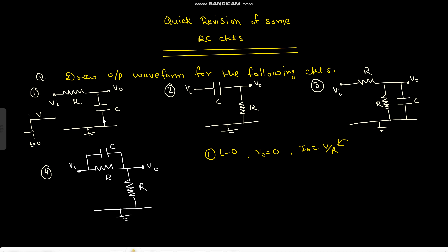Because of this current, the capacitor starts charging and will charge until the current gets to zero. The current becomes zero when the capacitor is charged to V volts. At that point, the current flowing through the resistor and through the capacitor will both be zero. So the capacitor charges from zero to V.